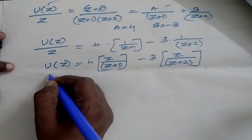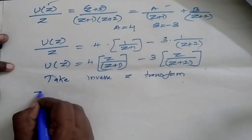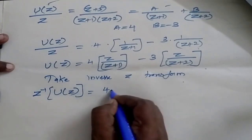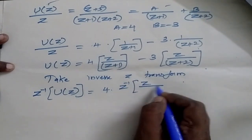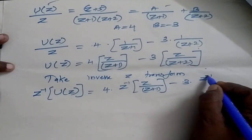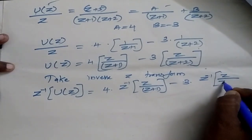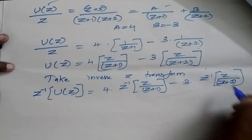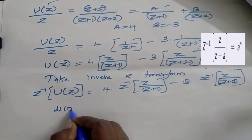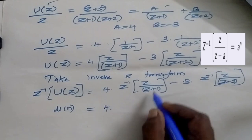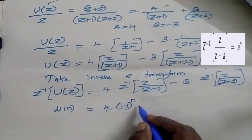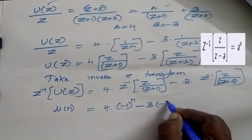Now we are going to take the inverse Z-transform. So Z⁻¹ of U(z) is equal to 4 times Z⁻¹ of z/(z+1) minus 3 times Z⁻¹ of z/(z+2). Now applying the formula, u(n) is equal to 4(-1)^n minus 3(-2)^n.